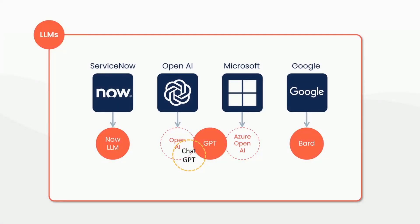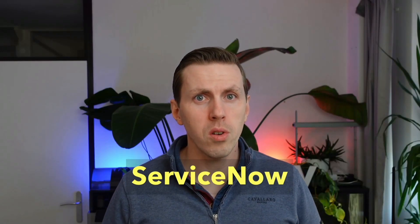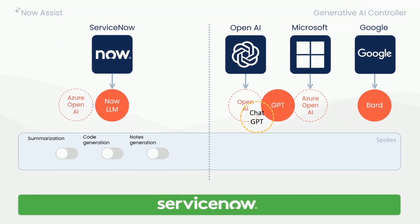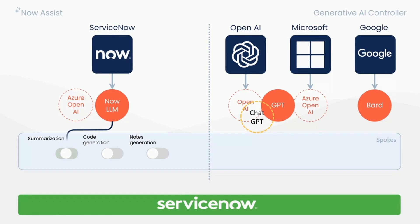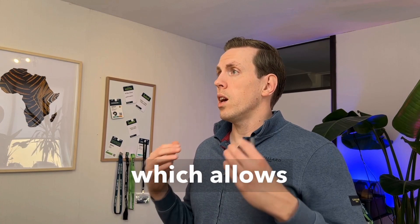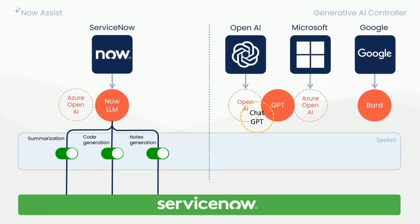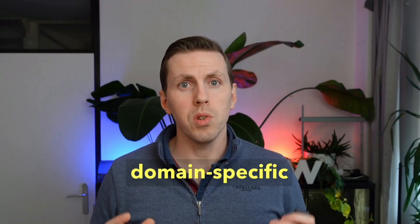Let's start off with where we ended the last video: the LLM overview. If you look at how ServiceNow uses those different LLMs, on the one hand, ServiceNow uses their NowLM and Azure OpenAI in NowAssist. NowAssist allows you to easily turn on plugins — for example, summarization, code generation, and node generation — which allows more functionality to come available within the platform. NowLM is based on GPT-43B, StarCoder, and an Encoder-Decoder LLM that is trained with domain-specific data.